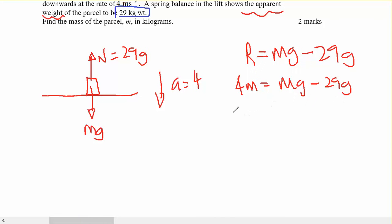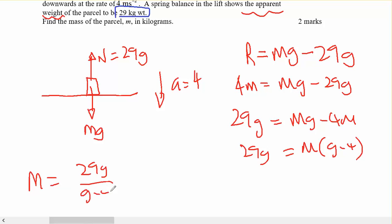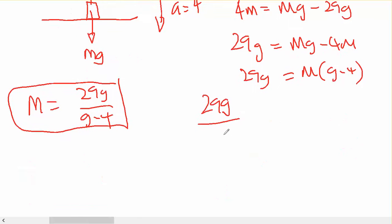I'll move the 29 G over. I have M G minus 4 M, which is M times G minus 4 times 29 G. So the mass equals 29 G over G minus 4. I'll accept that as an answer. Or 29 G divided by 9.8 minus 4.